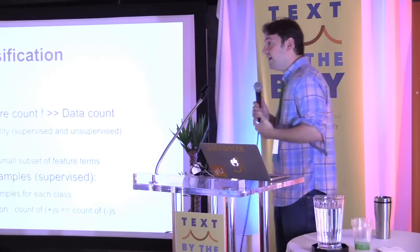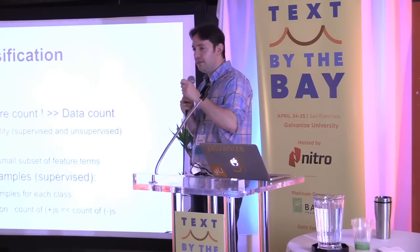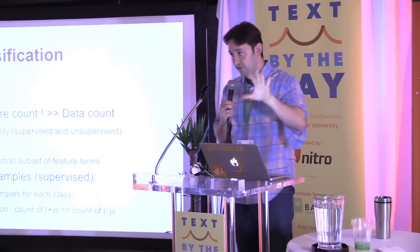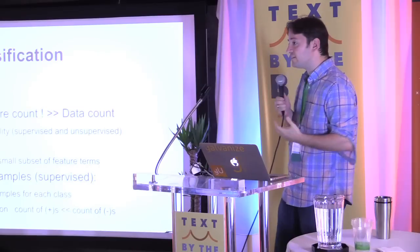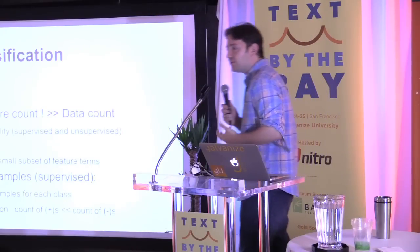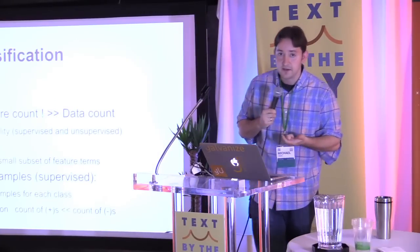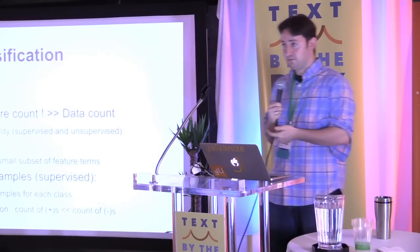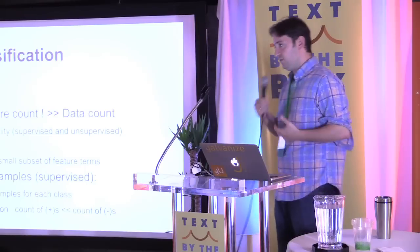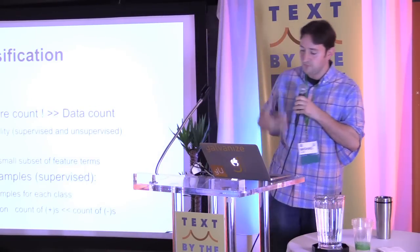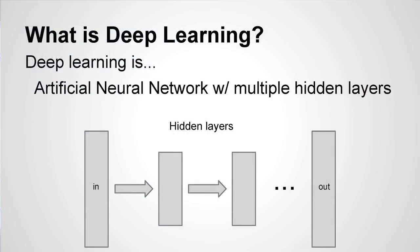Just like you're going to have sparsity on the number of terms that exist in each document out of the whole vocabulary, you're also going to have an imbalance in your data set itself. You're going to have far fewer positive examples for any particular topic than negative examples. So you're going to have to deal with this imbalanced data set and all the challenges that come from doing a supervised learning paradigm with it.